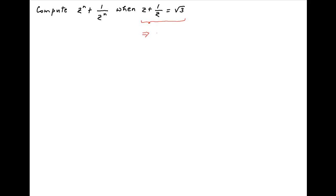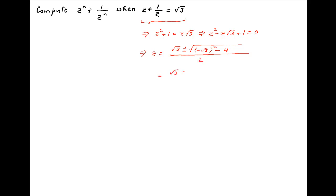We are given that z plus 1 upon z is equal to root 3. Multiplying by z, we get z squared plus 1 is equal to z times root 3. Moving all terms to the left-hand side, we get the quadratic equation z squared minus z root 3 plus 1 is equal to 0, which implies that z is equal to (root 3 ± √(3 - 4)) / 2, giving z = root 3 upon 2 ± i upon 2, which can be written as cos(π/6) ± i·sin(π/6).